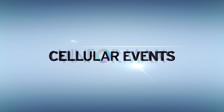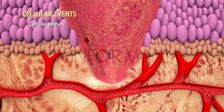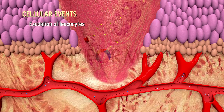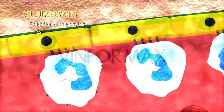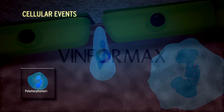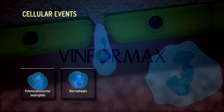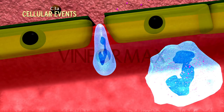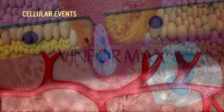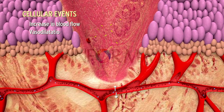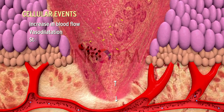Cellular events. The cellular phase of inflammation consists of two processes: exudation of leukocytes and phagocytosis. The most important feature of the inflammatory response is the escape of leukocytes from the lumen of microvasculature to the interstitial tissue. Polymorphonuclear neutrophils, followed later by macrophages and monocytes, comprise the first line of the body's defense mechanism. Changes in formed elements of blood: there is initial increase in blood flow due to vasodilation, followed by slowing or stasis of the bloodstream.